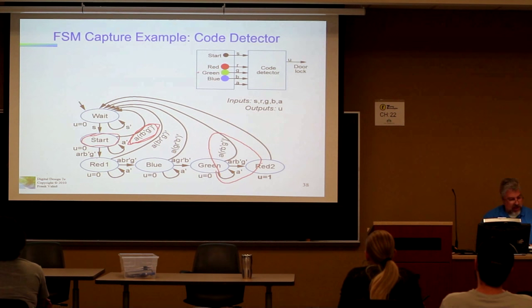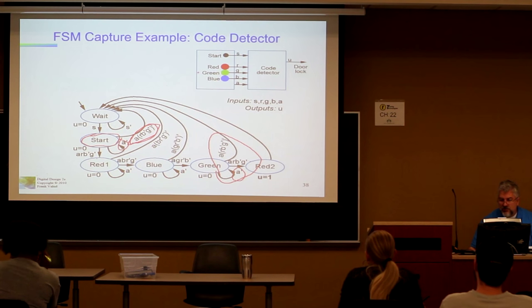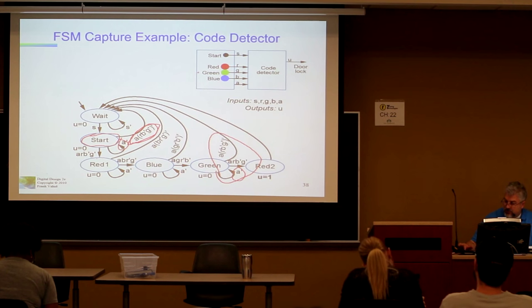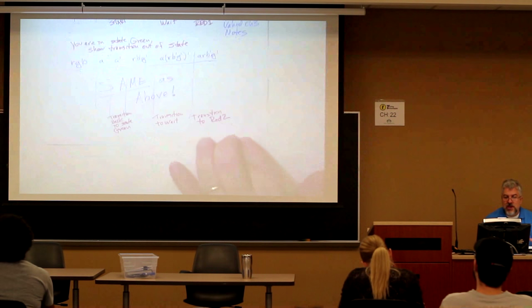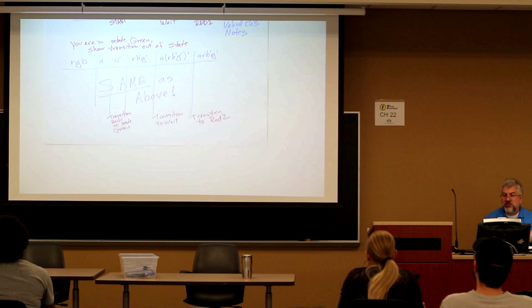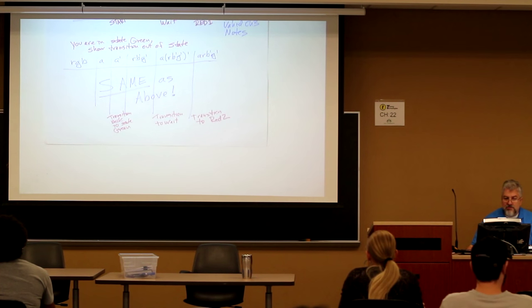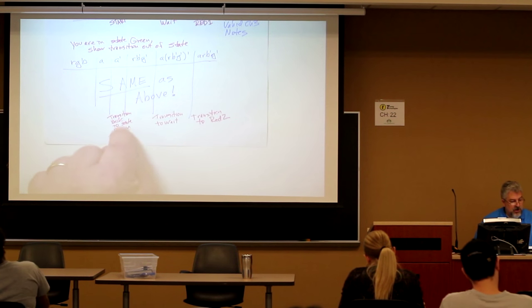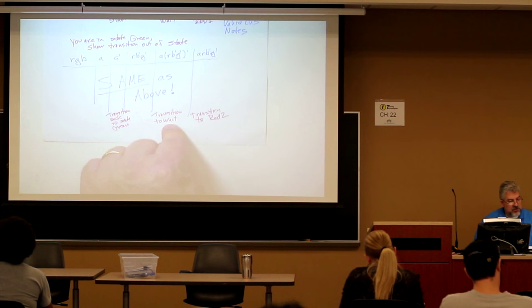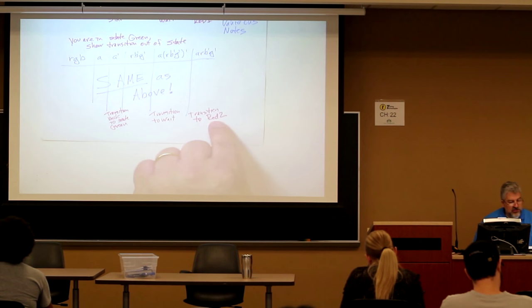All right we're back and I heard it almost immediately from somebody else, oh wait, A, A prime, A prime, A, R, B prime, G prime, A, R, B prime, G prime, A, R, B prime, G prime, prime, it's the same. And actually the thing to note is that the truth table is going to be the same, but the transition, you are in state green, show the transition out of state, well you know with A prime, it's just going to transition back to the state green. This will transition to the wait state and this will transition to red one.